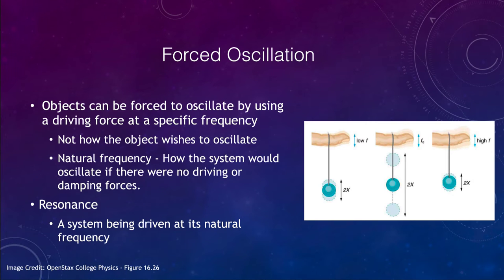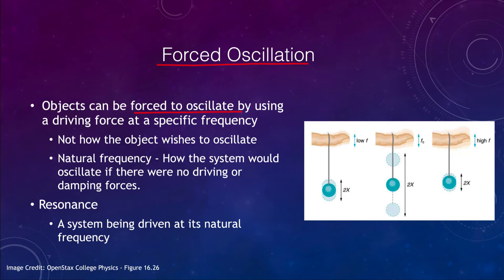First of all, we want to look at oscillations. We've talked a little bit about these before — we talked more about natural oscillations. These are what we call forced oscillations. Objects can be forced to oscillate by using a driving force that matches a frequency. For example, a ball on a rubber string could be forced to oscillate up and down by moving the hand or finger up and down.